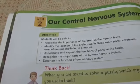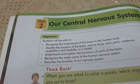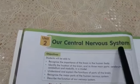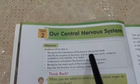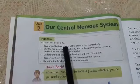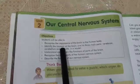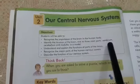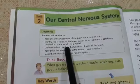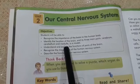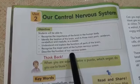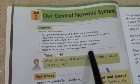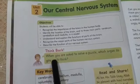Bismillahirrahmanirrahim, Assalamu Alaikum. Five class, how are you all? Today we are going to start a new topic: the Central Nervous System — hamara markezi asabi nazam. In this chapter we are going to discuss about the human brain, its importance, where it is located, and its main three parts: cerebrum, cerebellum, and medulla. We will also discuss the main functions of these three parts, and later we will discuss our nervous system.